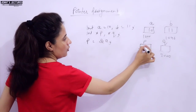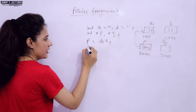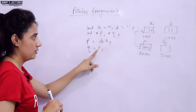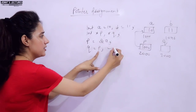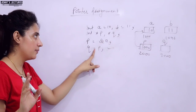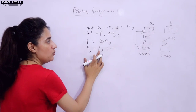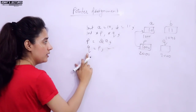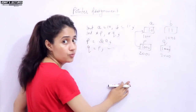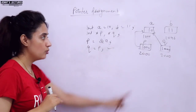Now if I write 'p = &a', then p stores the address of a, which is 1000 — so p is now pointing to a. If I then write 'q = p', whatever value is in p (which is 1000) gets assigned to q. So q also becomes 1000, meaning q is also pointing to a. Both pointers now point to the same variable.